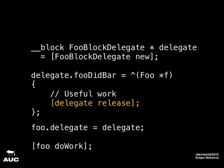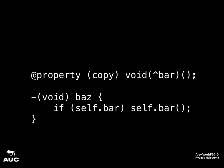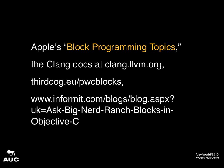This whole block delegate pattern got me thinking about another possible use. With a property that has a block type, you can change what the property does — you can change the block. So instead of using Objective-C runtime methods to change the implementation of a method at runtime, just have a method that calls off to a block property. Set the block and that's the implementation. If you want to learn more about blocks, check out Apple's own documentation in Xcode developer documentation under Block Programming Topics, and the Clang documentation — Clang being the first compiler frontend to implement blocks.